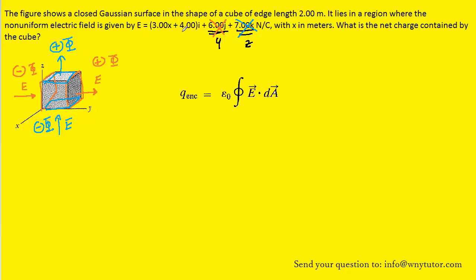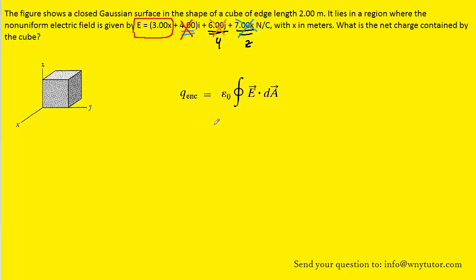Through a similar argument, we can even ignore the constant contribution of the electric field in the x-direction. Notice this 4.00 doesn't have a variable attached to it — there's no x here — so we can disregard that contribution as well. We're really just left with considering the variable part of the electric field in the red box. Now it's time to evaluate the integral. The dot product can be re-expressed as the magnitude of E times the magnitude of dA, multiplied by the cosine of the angle between the electric field and dA.